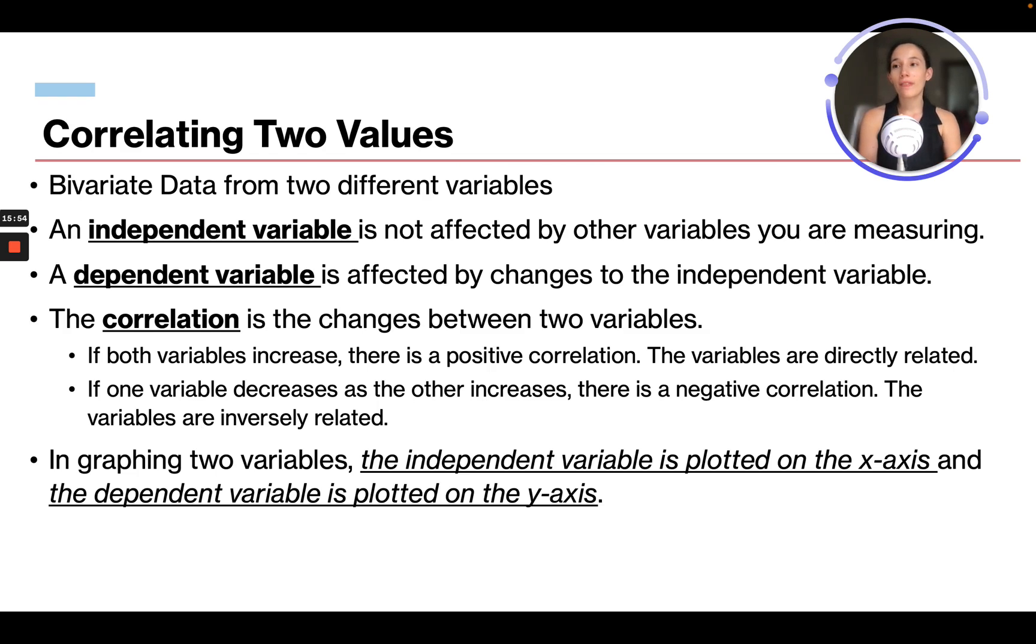So correlating two values. We kind of talked about this when we touched on histograms, but bivariate data from two different variables. You're going to have an independent variable, which is not affected by other variables you're measuring, and a dependent variable, which is affected by changes to the independent variable. We go over this also in the ATIT 7 science course, different variables and experiments. So the correlation is the changes between the two variables. You do scientific research, you're looking at an independent variable and how it affects a dependent variable.